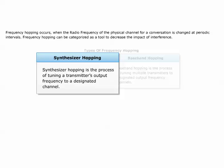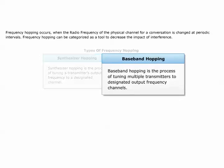Synthesizer hopping involves tuning the transmitter's output frequency to a designated channel, sending the burst of information, and then retuning the transmitter's output frequency to the next channel and repeating the process. Baseband hopping is the process of tuning multiple transmitters to designated output frequency channels. Each burst of information would be sent out by one of the transmitters and then the next burst is directed towards a transmitter tuned to a different output frequency, repeating the process.